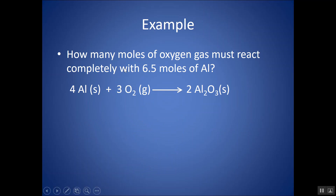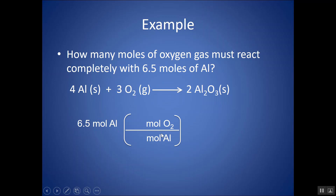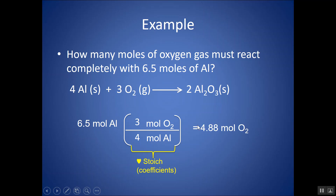How many moles of oxygen gas must react completely with 6.5 moles of Al? I start with 6.5 moles of Al — be specific — and I want to change this to moles of oxygen gas, O2, which is one of my diatomic molecules. I want a conversion factor where I have moles of Al on the bottom so they cancel, and moles of O2 on top. I get the numbers from the coefficients: Al has a coefficient of 4, O2 has a coefficient of 3. Remember, to use these coefficients I have to be in moles. In my calculator, 6.5 times 3 divided by 4 gives 4.88, or 4.9 rounding to two sig figs. Moles of Al cancel out — I've converted moles of aluminum into moles of oxygen gas.